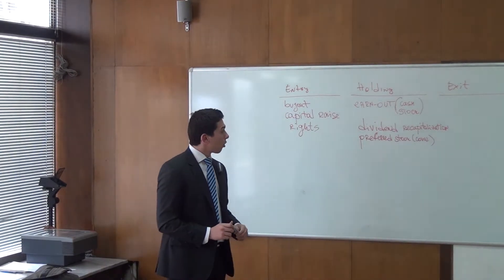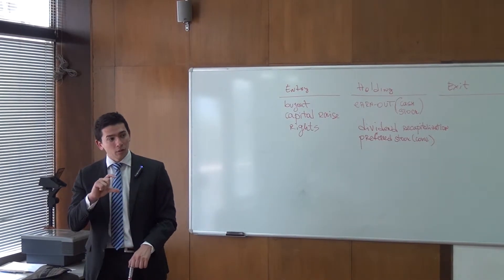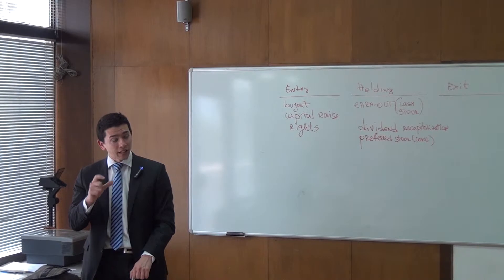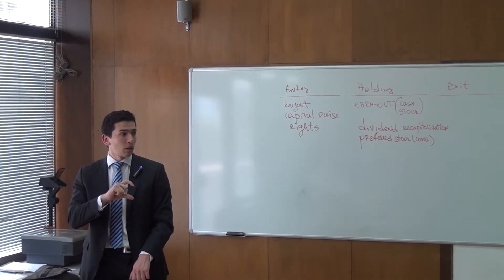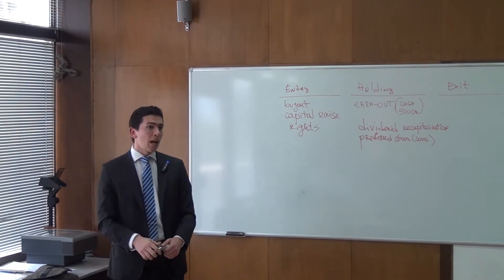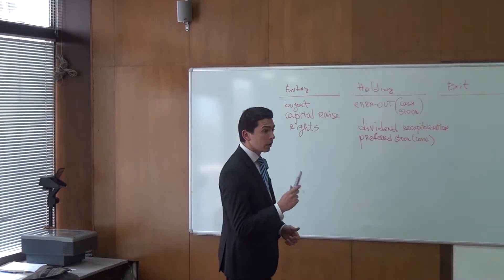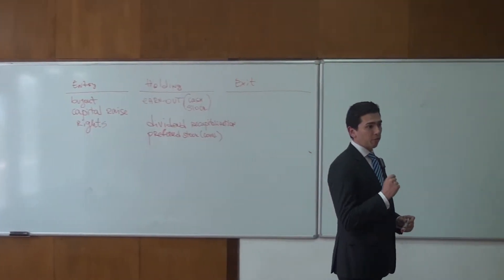What we have is preferred stock that is valued two times at exit—valued two times the cost at entry. So the value of money is basically doubled at exit, and no common equity holder can receive any proceeds from exit before the preferred stocks are fully paid.